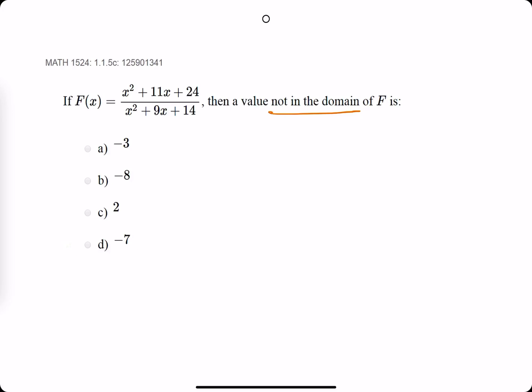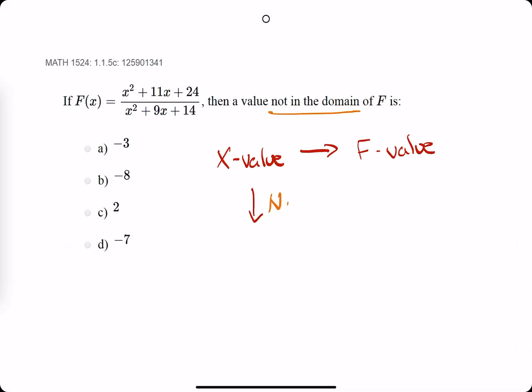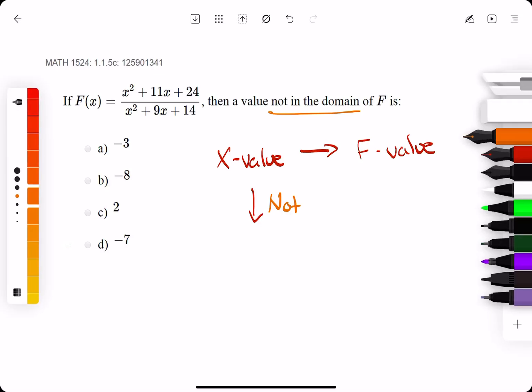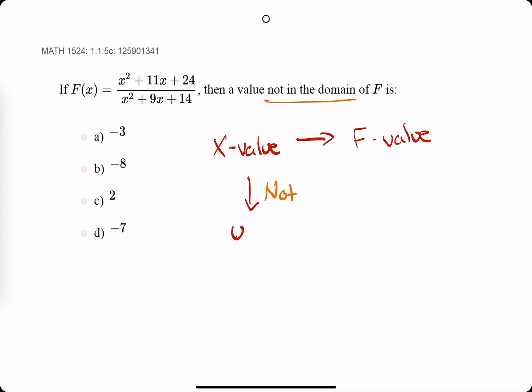To be in the domain means you can plug in an x value and it's going to give you an output or an f value or a y value, however you like to see it. To be not in the domain means you plug in an x value and it gives you an undefined function value.